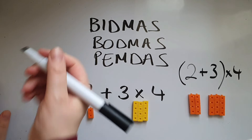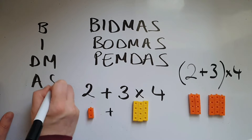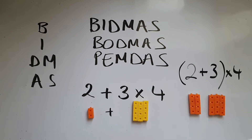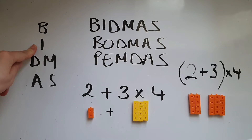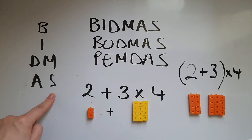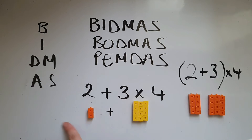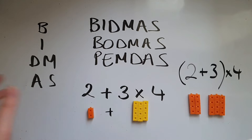I want to put BIDMAS in this way. When we've got brackets, we do brackets first. When we've got indices or powers, we do them next. And if we've got multiplication or division, we do them before addition or subtraction. But if we've got both, we do them in the order that they're given to us, starting from the left to the right. And the same thing with addition and subtraction — starting from the left to the right.